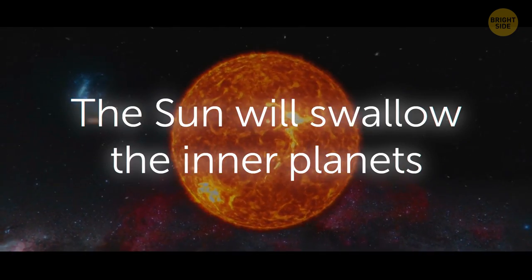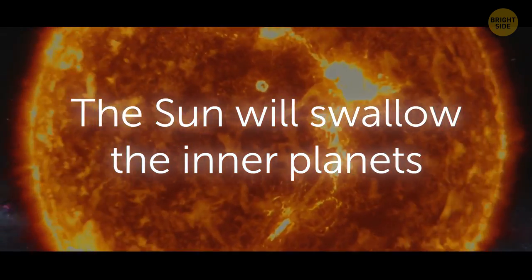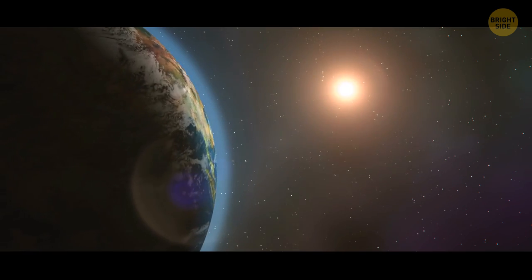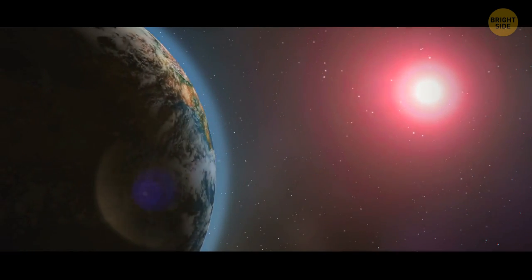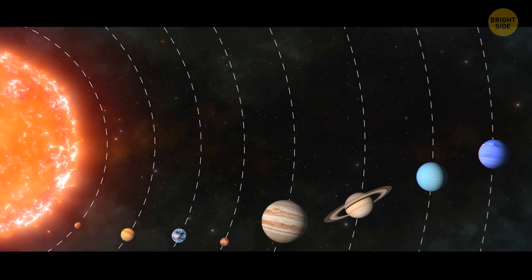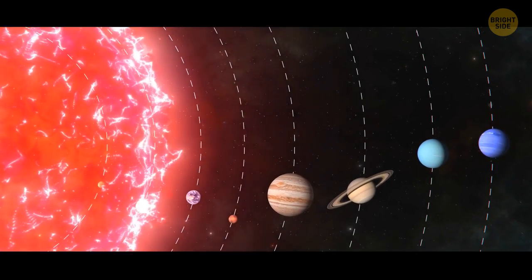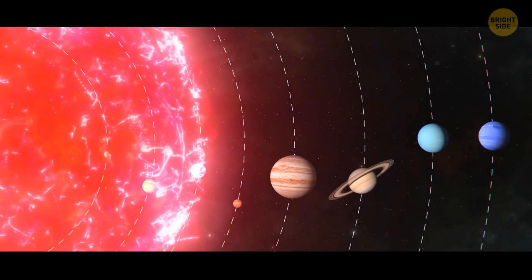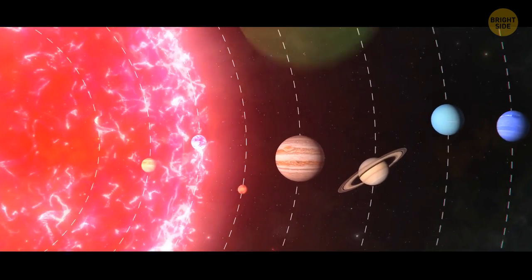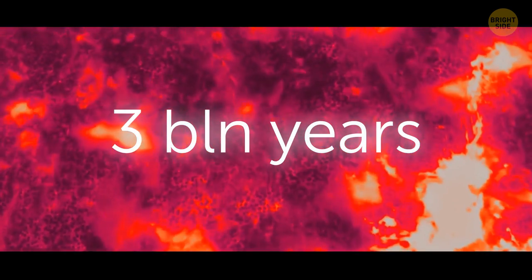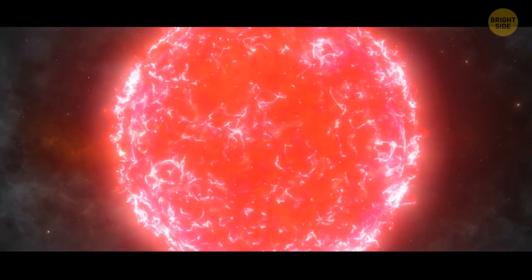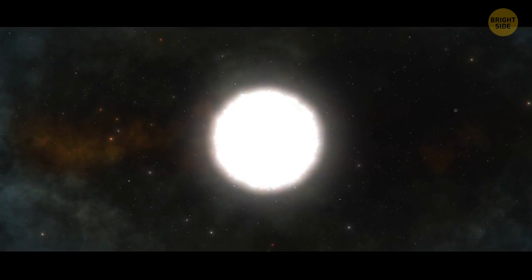The Sun will swallow the inner planets. In 5 billion years, the Sun will begin to evolve into a red giant, growing hundreds of times its current size. It'll swell up so much, it will eventually engulf Mercury, Venus, and possibly Earth. The new Goldilocks habitable zone may shift to the orbits of Jupiter and Saturn. This process will take a bit under 3 billion years until the Sun reaches its maximum size. After that, our star will shrink into a white dwarf.